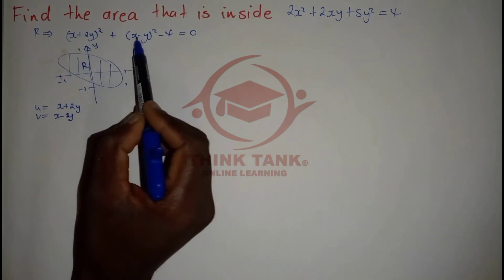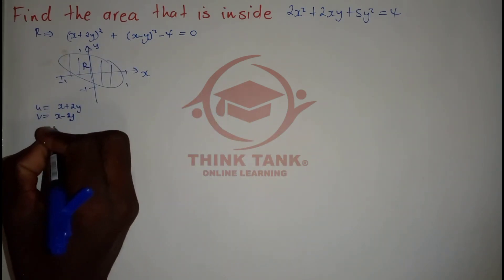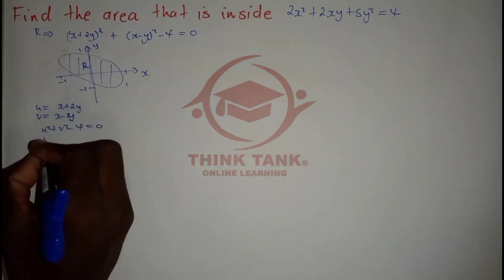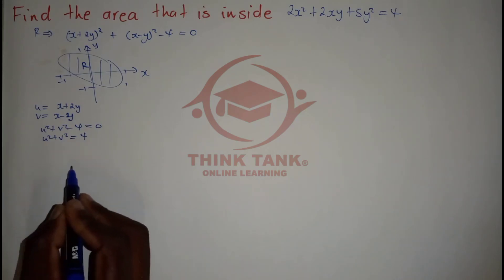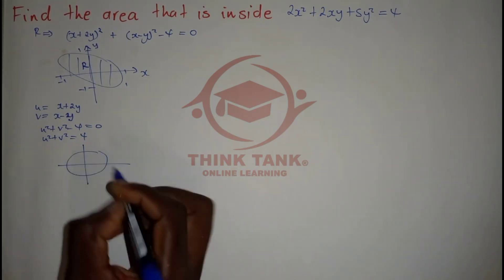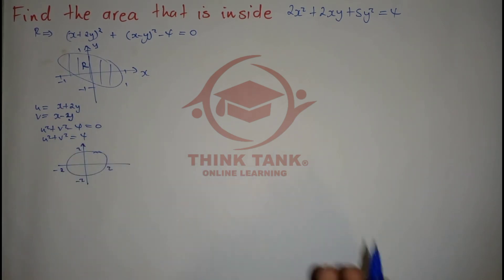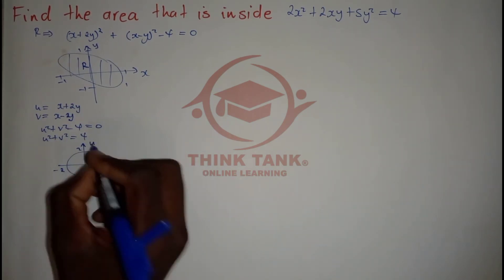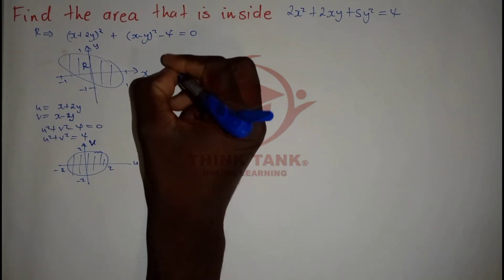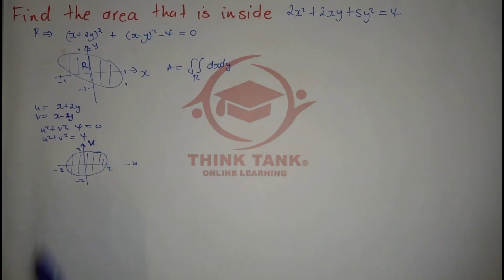With u = x + 2y and v = x - y, I obtain u² + v² - 4 = 0, which gives u² + v² = 4. This is a circle with radius 2 in the uv-plane. The area of this region can be found by integrating over the region with respect to x and y, but since we've transformed coordinates, we need to calculate the Jacobian.